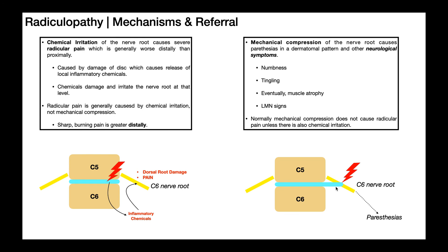Hopefully this video gives you some good information on the difference between chemical irritation — i.e., radicular pain — and mechanical compression — i.e., radiculopathy. In the next video, we're really going to be exploring these dermatomal patterns and we'll see how to predict where we might find paresthesias in mechanical compression or radicular pain. Please make sure to like this video and subscribe to my channel for future videos and notifications. Thank you.